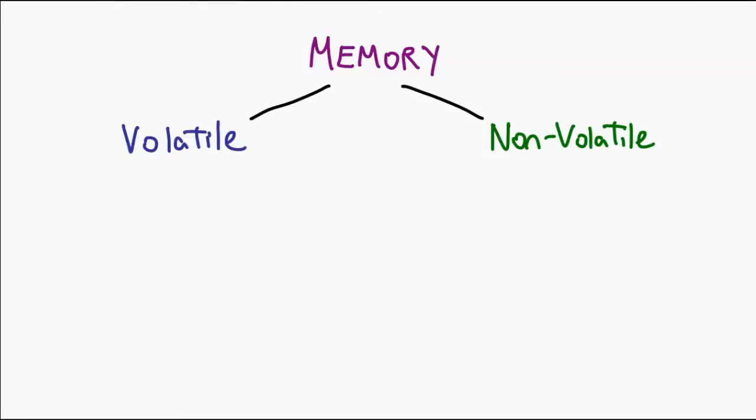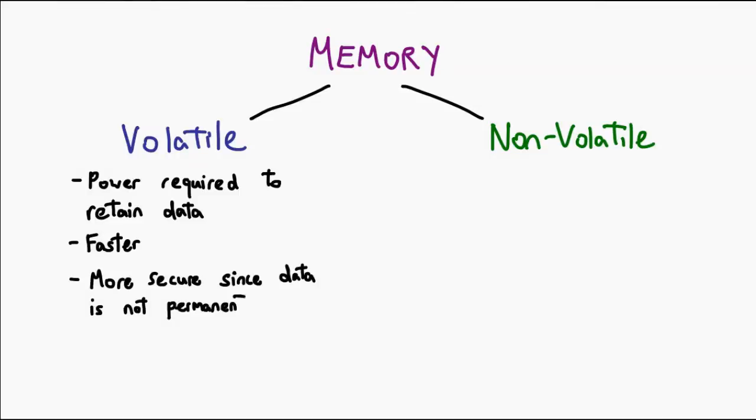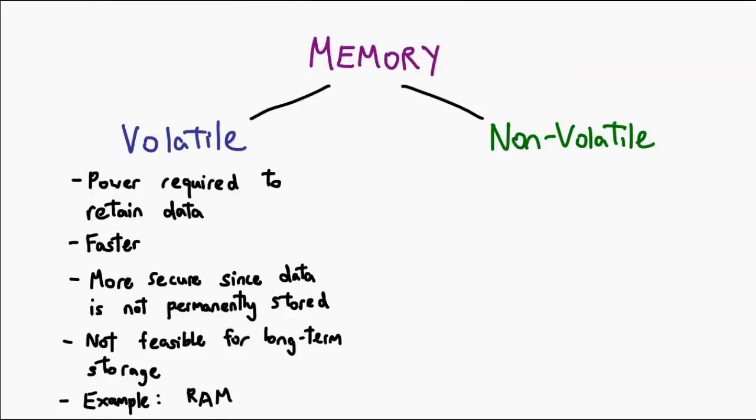Volatile memory refers to memory that requires power to retain data. These sorts of memory have the advantage of being faster, and also as a side effect of the fact that they can't hold memory when unpowered, they tend to be more secure. The disadvantage is obvious: you can't use this as a form of long-term storage. Your computer RAM is a good example of volatile memory.